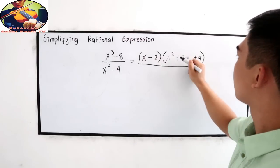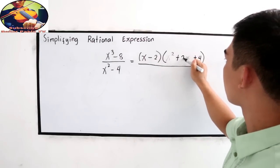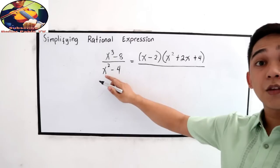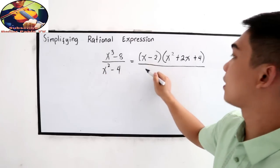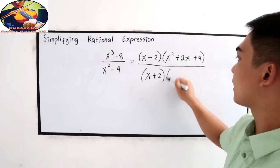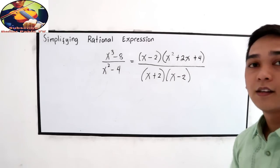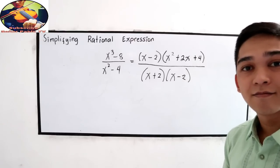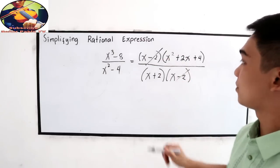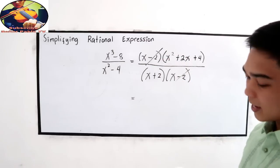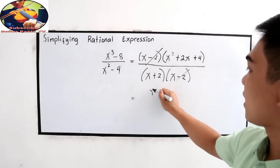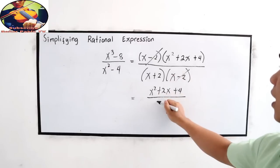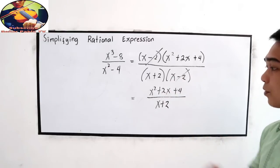All over, difference of two squares. That is x plus 2 and x minus 2. Now, what expression can we cancel out? We have x minus 2, x minus 2. And our final answer is x squared plus 2x plus 4, all over x plus 2.